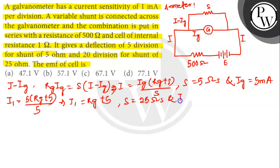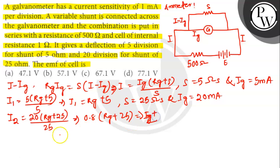So S equals 25 ohms and IG equals 20 mA. So we can write I2 equals 20 into RG plus 25 divided by 25. So I2 will be 0.8 into RG plus 25. We can write it as I2 equals 0.8 into RG plus 25.